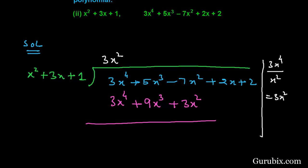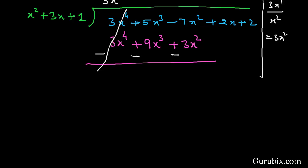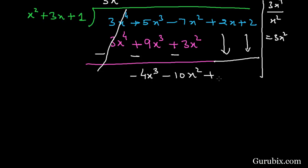Now we shall change the sign of these terms, then we have these two terms cancelled. Here we have minus 4x cubed and minus 10x squared.